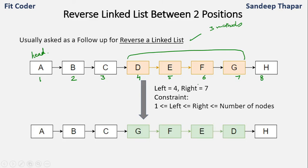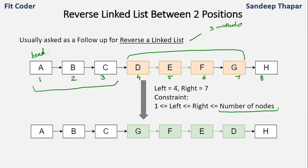The result will be: A, B, C remain as they are, then D, E, F, G will be reversed to G, F, E, D, and then H will be at the end of the list. The constraint here is that left and right are both greater than 1 and less than the number of nodes, so we are only dealing with valid cases.